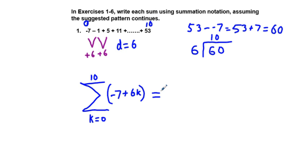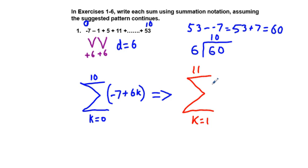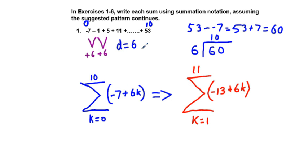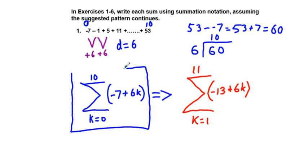The way the book worked this out was instead of starting with k equals 0, they started with k equals 1 and went all the way to 11. But instead of starting with negative 7, they started with negative 13 (which is negative 7 minus 6) plus 6k. If you follow this out logically it does work, but the blue version starting at k=0 with negative 7 makes more intuitive sense. Either one would be a correct answer.